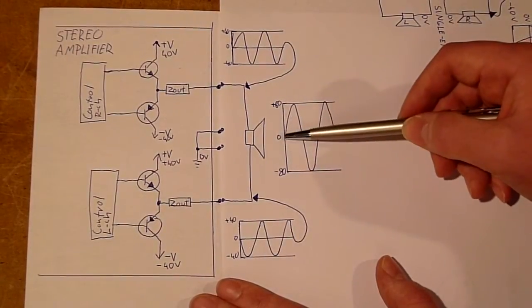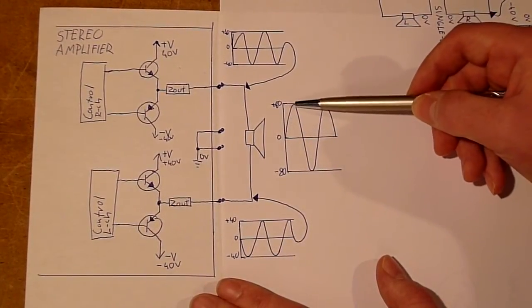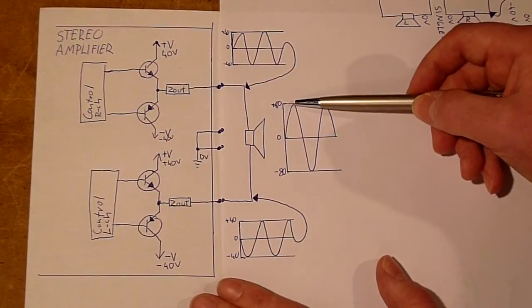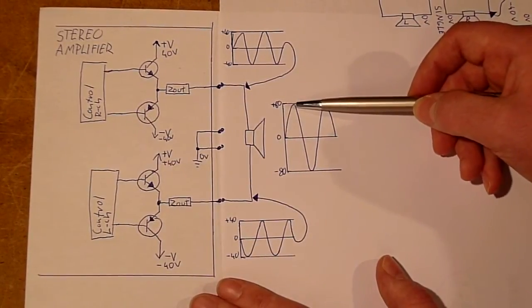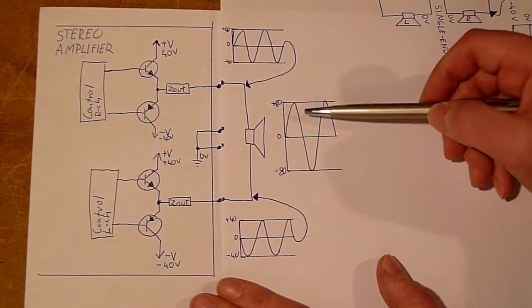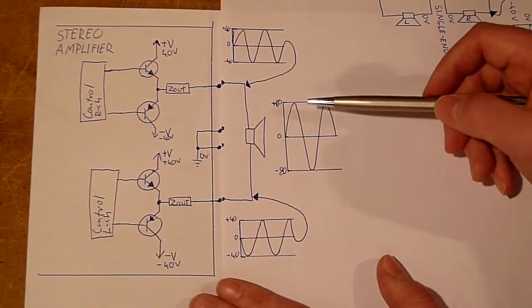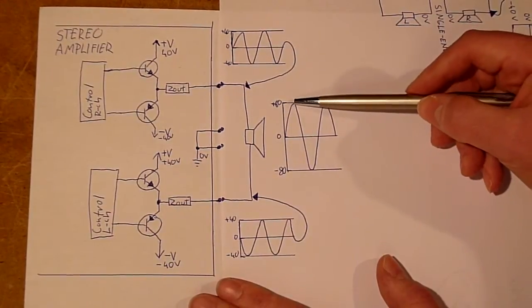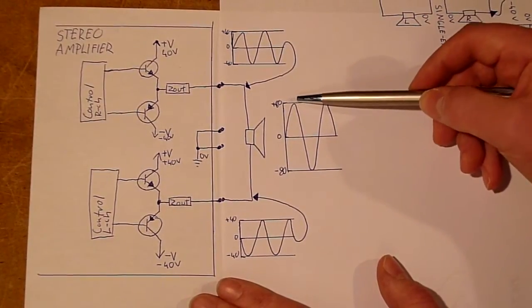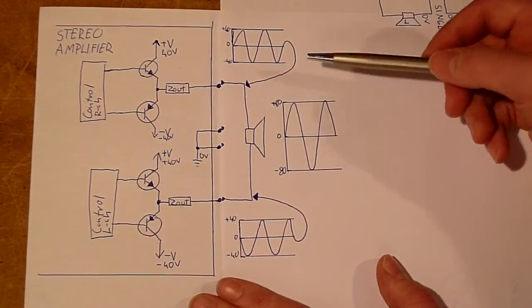the speaker sees a potential difference of 80 volts, which results in four times the power you could get out of either of your two stereo speakers before. And this is the prime benefit of running a bridge-tied load amplifier.